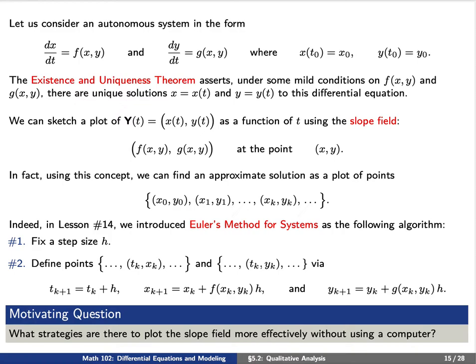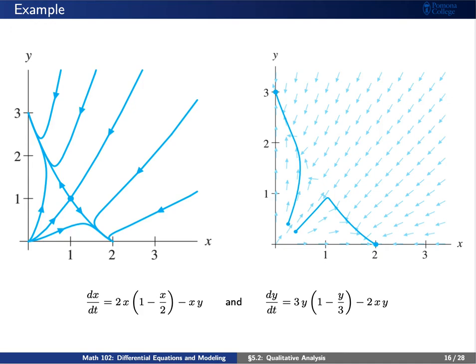We'd like to know what strategies we can use to plot this slope field more effectively. Here we give an example of a logistic predator-prey model, plotting the phase plane on the left and the direction field on the right. On the right, we've plotted all the various arrows, and by roughly connecting them we can find the two different solutions shown. However, we'd really like a much more detailed analysis, which is the phase plane on the left. This is what we'll discuss today — different ways to try our best to plot the phase plane.